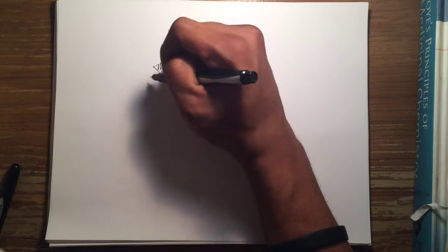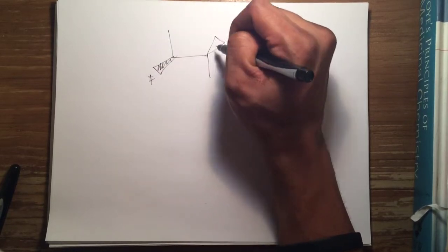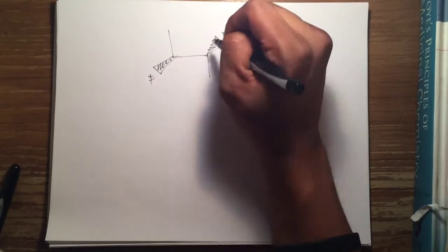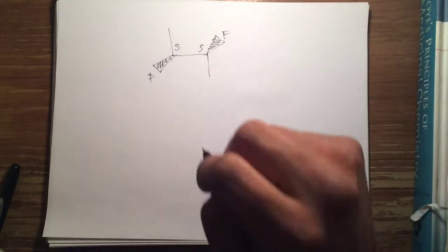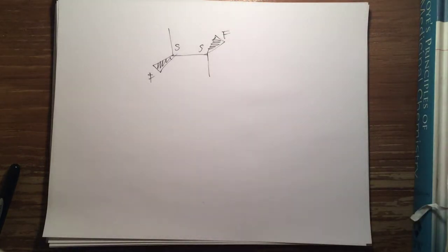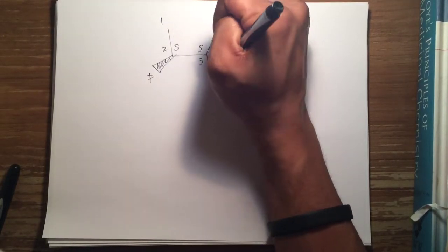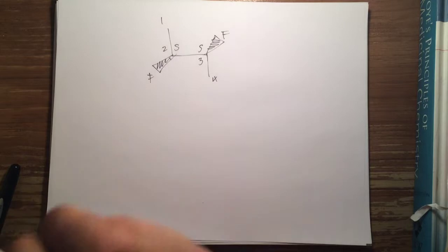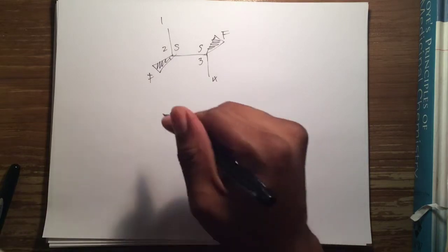Since we've identified the chiral centers for our molecule, what we're going to do — since we've got the chiral centers and also we have the absolute configuration which is SS — is we're going to take this molecule and attempt to draw the epimer of it. Now first, before we draw the epimer, you have to understand what the epimer is.